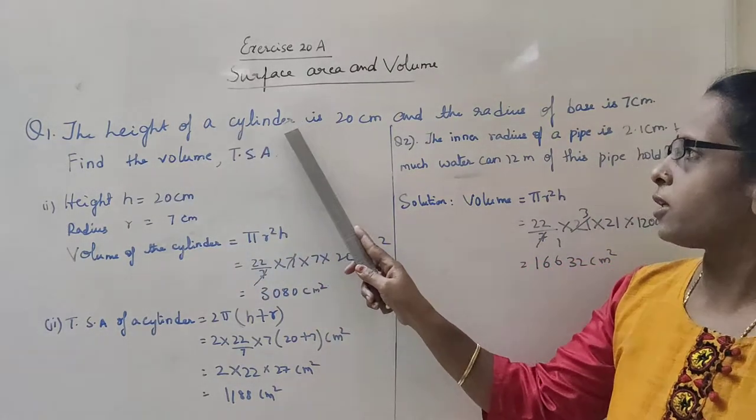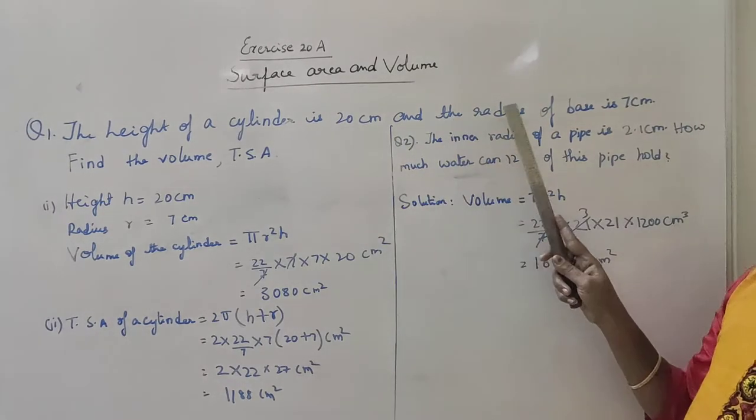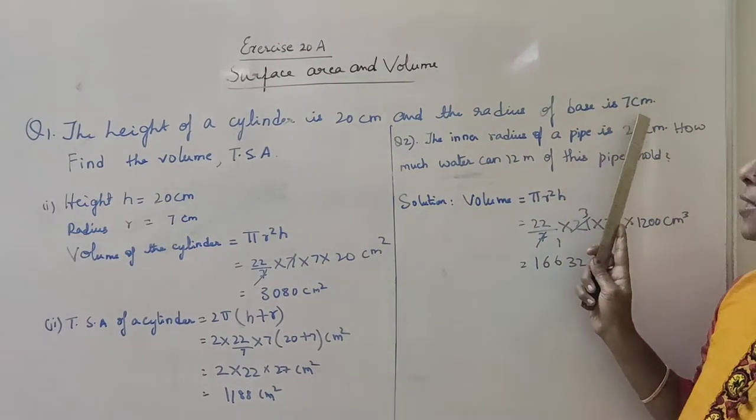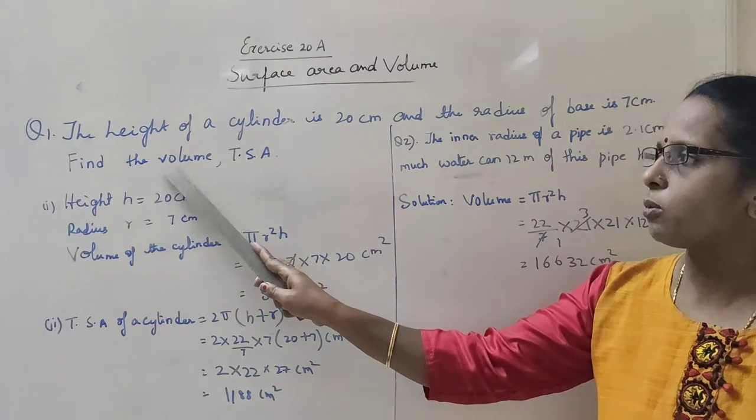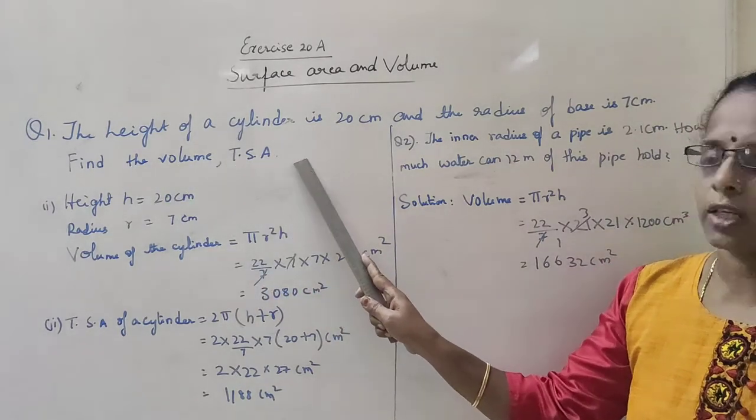The height of the cylinder is 20 cm and the radius of the base is 7 cm. So here we have to find out the volume and the total surface area.